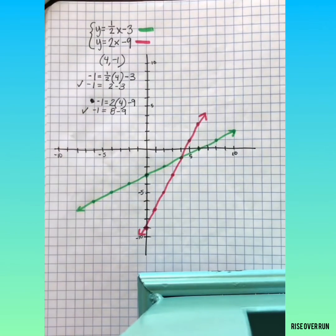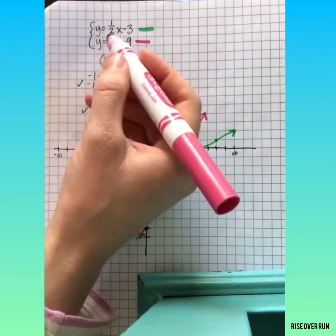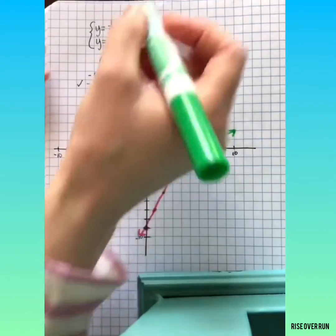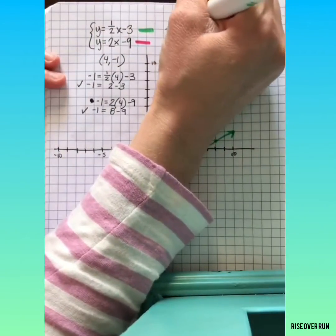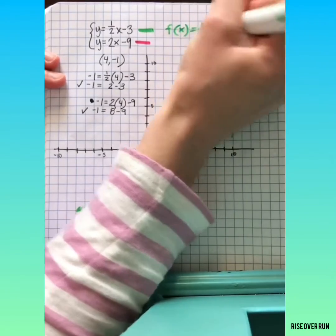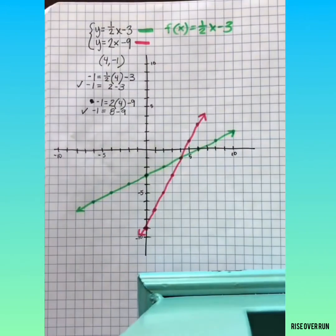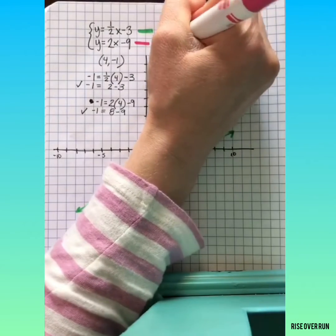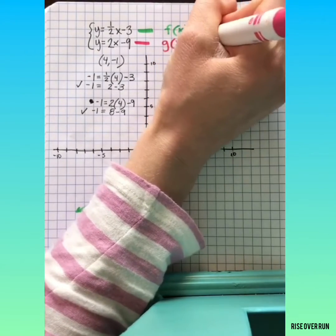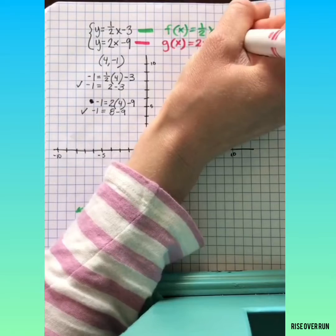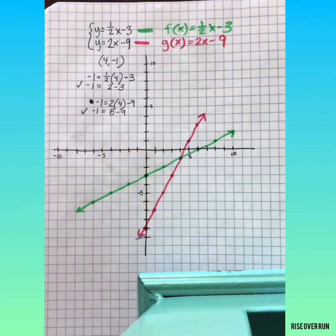Now you may see systems of equations written in function notation. So we could write instead of a y, f of x. And then you may see other letters used like g of x. This means the same thing as y.